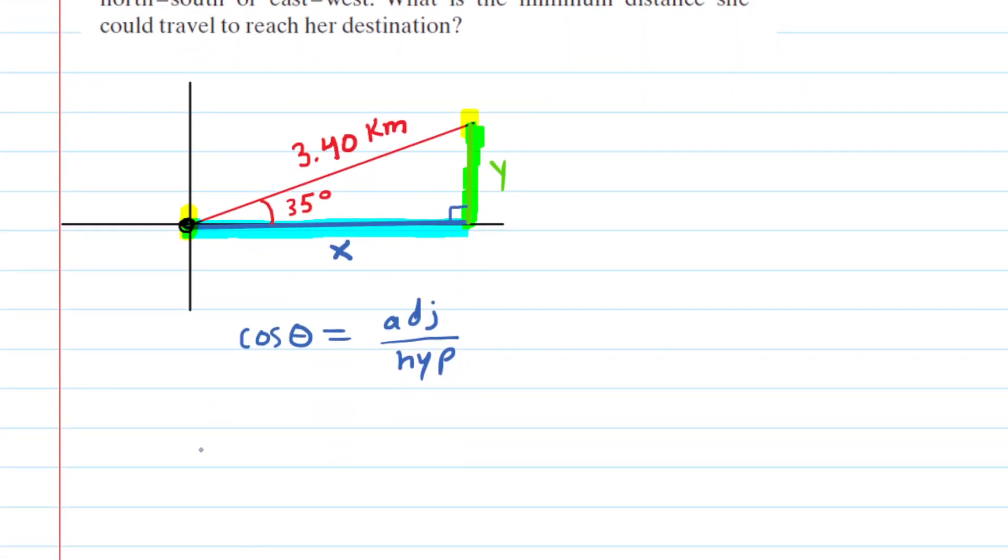Now, looking at this figure, we can see that the cosine of 35 degrees would equal the adjacent. The adjacent side to the 35-degree angle is x, and the hypotenuse is 3.4 kilometers. We're going to solve this for x by multiplying both sides of the equation by 3.4 kilometers so that we can cancel it out on the right-hand side.